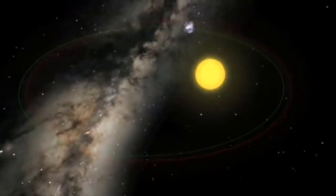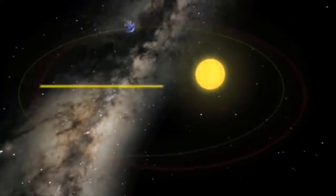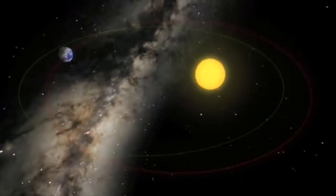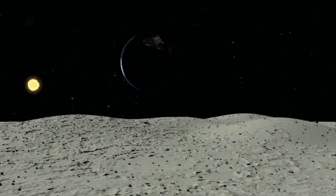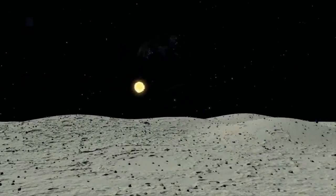At the equator, the Earth rotates at a speed of about 1700 kilometers per hour. But at the poles, the movement speed is nearly nothing.